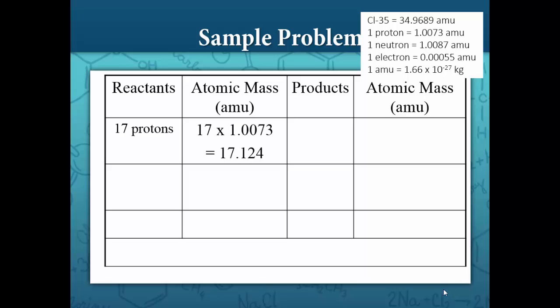17 protons, each with a mass of 1.0073 atomic mass units, is equal to a total of 17.124 atomic mass units. 18 neutrons, each with a mass of 1.0087 AMUs, has a total mass of 18.157 AMUs. We also have 17 electrons, but 17 electrons, each with a mass of 0.00055 AMU, doesn't even work out to be a hundredth of an AMU, so their mass is negligible. Totaling the mass of protons with the mass of neutrons, we get a combined mass of particles as 35.281 AMUs.